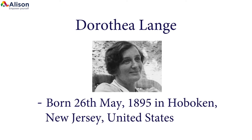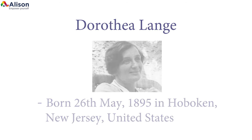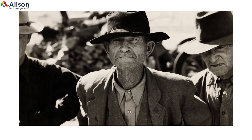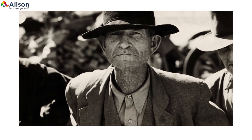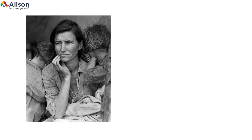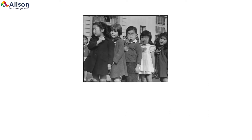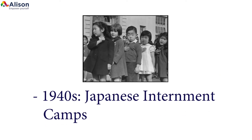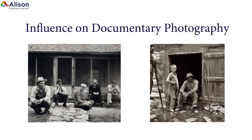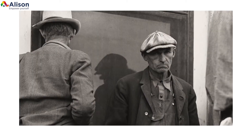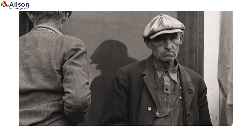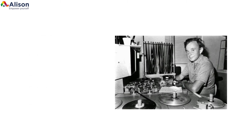Dorothea Lang was born on the 26th of May 1895 in Hoboken, New Jersey, United States. She is famous for the photographs she took during the Great Depression. She took the famous photograph of a migrant mother, which is said to be one of the best known photographs in history. In the 1940s, she also photographed the Japanese internment camps. Her portraits of displaced farmers during the Great Depression greatly influenced later documentary photography. One of the greatest features of Lang's work is the observational nature of her photography, reminiscent of the documentary filmmaker Frederick Wiseman.